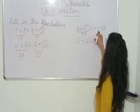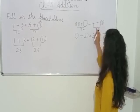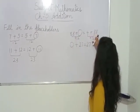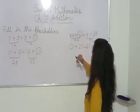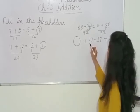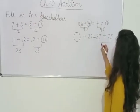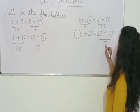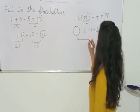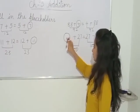Here we have 88 plus blank equals 4 plus 88. The total of 4 plus 88 is 92. The other side must have the same total. Here there is 88, so the missing number is 4. We write 4. Now look at here: 27 plus blank equals 27 plus 73. The total of 27 plus 73 is 100. Here we have 27, so the missing number is 73.